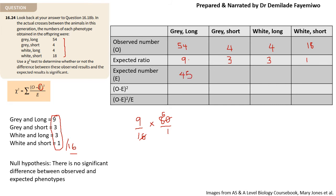So the expected number for gray and long is 9/16 × 80 = 45. For gray and short: 3/16 × 80 = 15. For white and long: 3/16 × 80 = 15. And for white and short: 1/16 × 80 = 5. These expected numbers tell us what we predicted from 80 offspring based on our ratios.